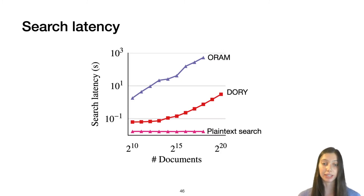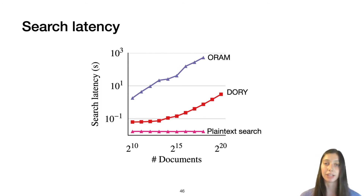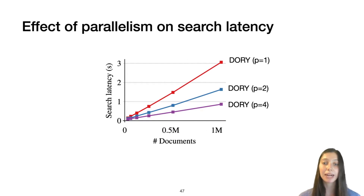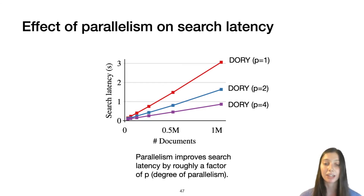Looking at search latency — both axes use a logarithmic scale — Dory is in the range of a few seconds for large numbers of documents around one million, while our ORAM baseline has much higher search latency, in the range of thousands of seconds, well outside the companies' requirements. The difference between the two is around 185 times. A few seconds for a million documents might still be too much for some users, but we showed that with parallelism we can reduce search latency for a million documents to around three seconds, or under one second with further parallelism. Our protocol is highly parallelizable across both multiple threads and multiple servers.